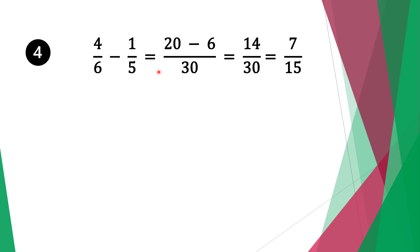Do the same for the second fraction: thirty divided by five is six, six times one is six. Twenty minus six is fourteen. Now top and bottom are divisible by two: fourteen divided by two is seven, thirty divided by two is fifteen. So our solution is seven over fifteen.